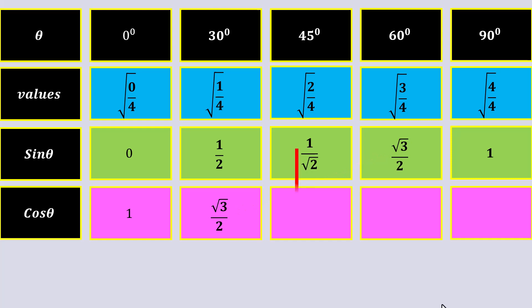cos 45 is equal to 1 over under root 2. cos 60 is equal to 1 over 2. cos 90 is equal to 0.